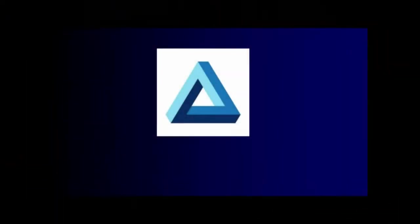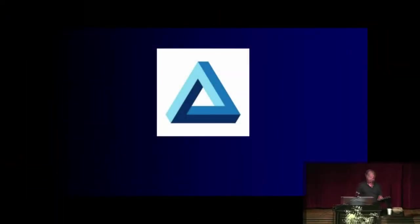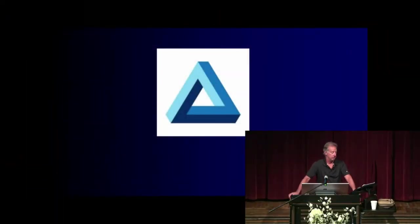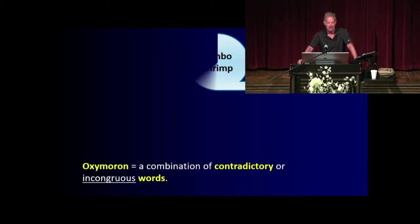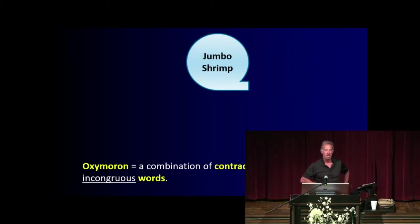I think most of you probably are familiar with what an oxymoron is. So an oxymoron, here's the definition: it's a combination of contradictory or incongruous words. And I think most of you maybe know that. Here are some examples: jumbo shrimp is probably the most famous one, right? We have jumbo and then shrimp, which seems contradictory.